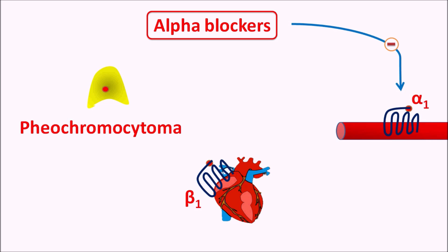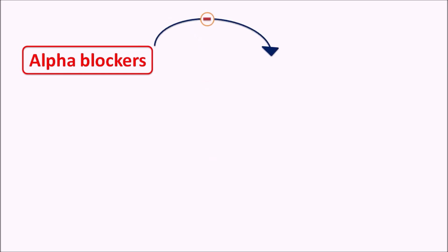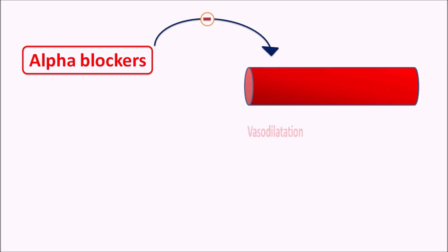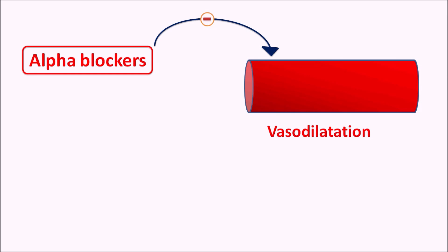In this way, alpha blockers are useful in the surgical removal of pheochromocytoma, as well as in its diagnosis where they block the alpha 1 receptors. The side effects of alpha blockers are related to their vasodilatory actions, as these drugs mainly block vascular smooth muscle, resulting in vasodilation which produces various types of side effects.